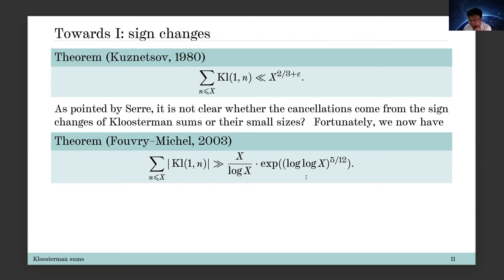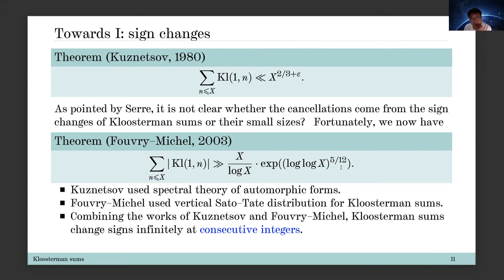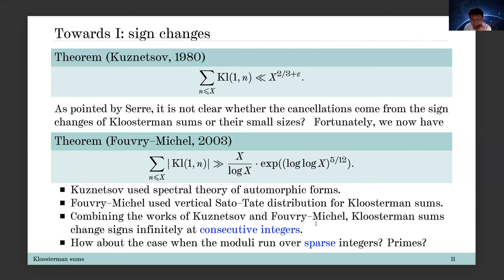If you want to conclude something about sign changes, you have to give some nontrivial information for the average of Kloosterman sums with absolute values. This was done by Fouvry and Michel in 2003 — they were able to give positive lower bounds on this average. Kuznetsov used the spectral theory of automorphic forms, while Fouvry and Michel used étale cohomology to prove a certain vertical distribution of Kloosterman sums. Combining the two results, we can conclude sign changes of Kloosterman sums with integral moduli.